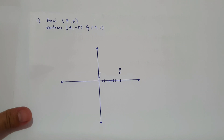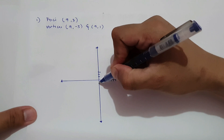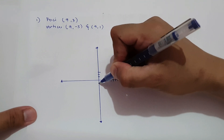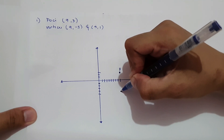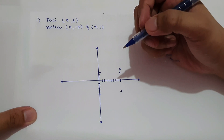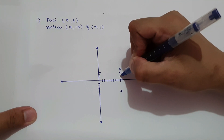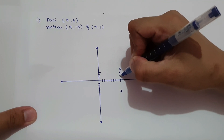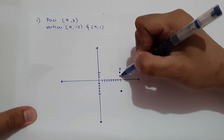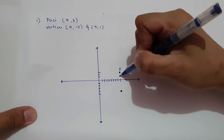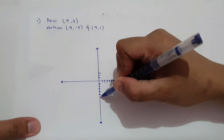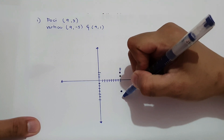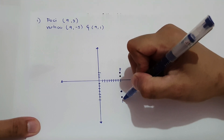Next, let us plot the vertices. That is (9, -5), so we count 5 units down. So this is one vertex. Next, we have (9, 1). As you can see, the distance from the vertices to the foci is 2 units. So if we have 2 units upward, we are going to have 2 units down from the vertex. So this is our second foci.